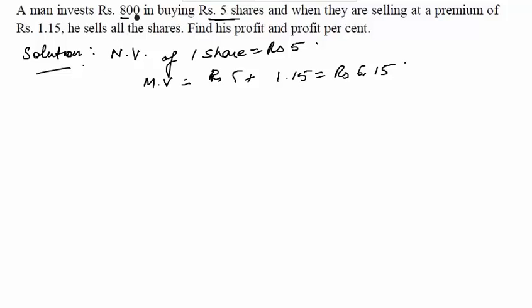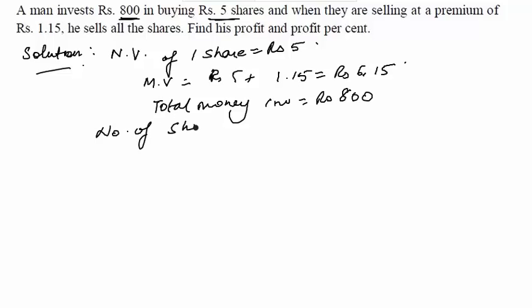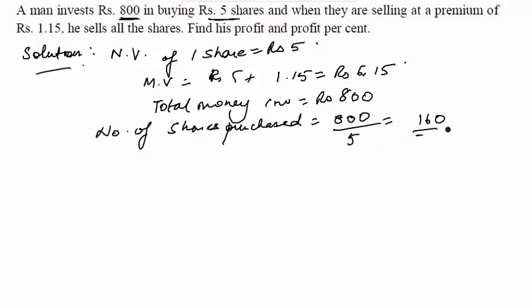It is given that the total money invested is rupees 800. The number of shares purchased will be equal to the total money invested divided by the market value of one share. This chapter is totally formula driven — we should be clear about when to use what formula. So number of shares purchased equals 800 divided by 6.15, which comes out to be 160.